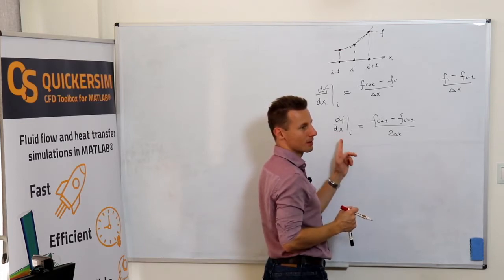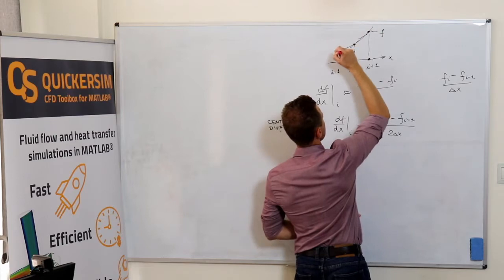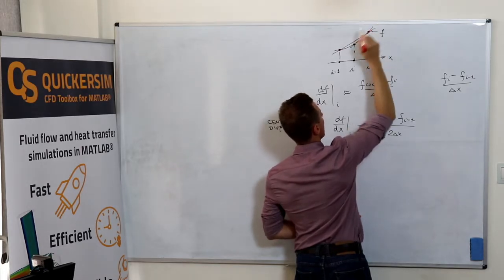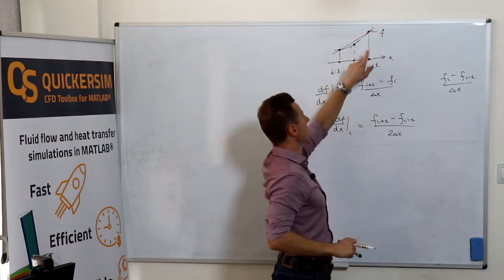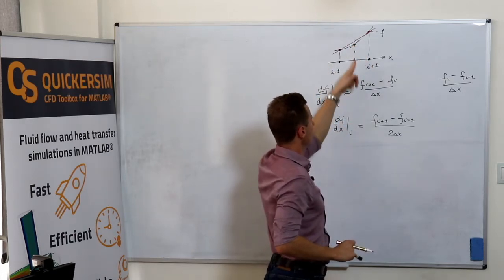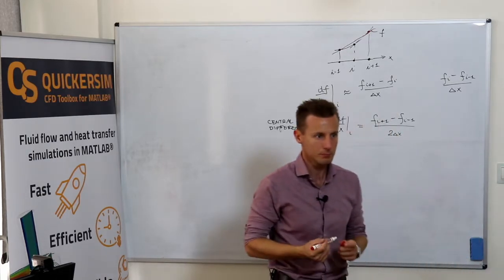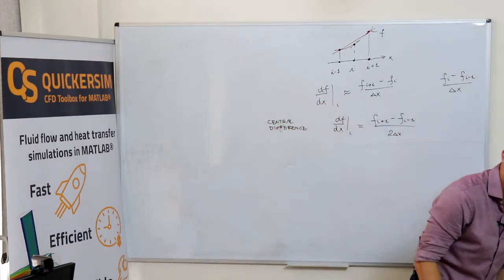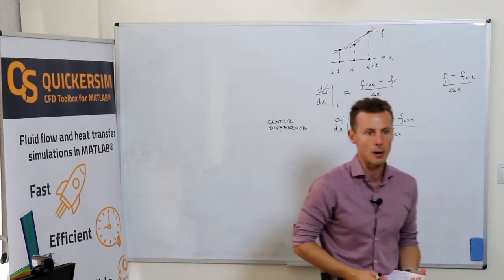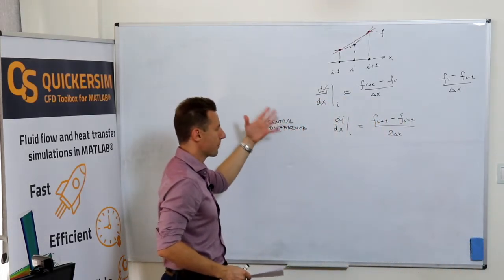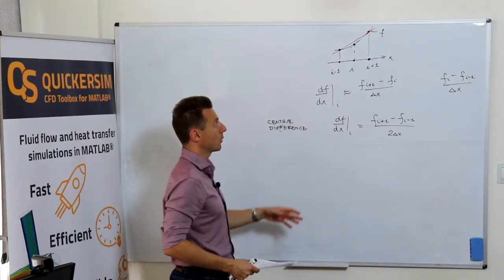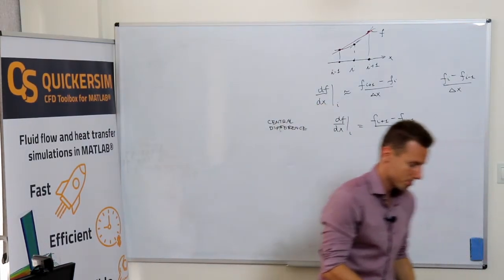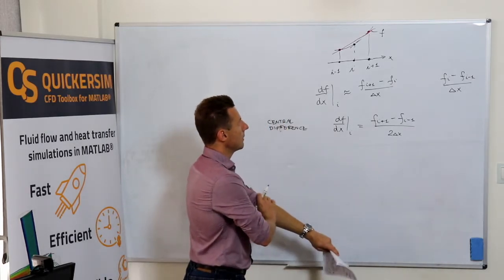The slope calculated out of these two points will be a great approximation to the first derivative at the central point. Clear, intuitive. Okay, so let's quit with intuition right now. We need to have a consistent way to calculate any approximation of nth derivative that we might want to have.